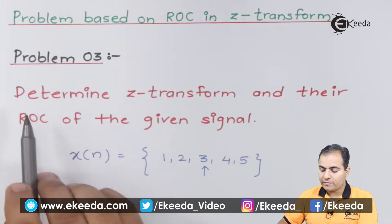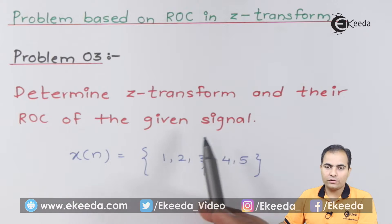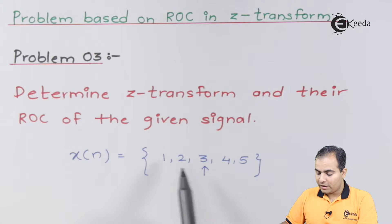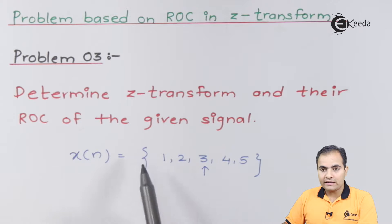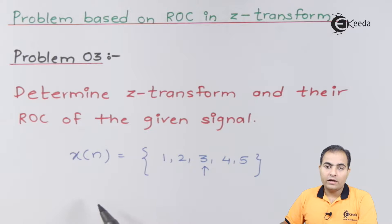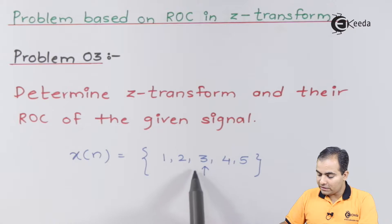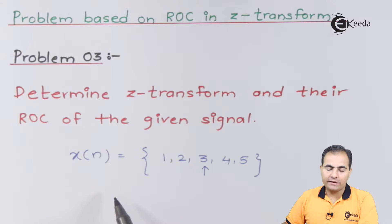Problem number three: determine the Z-transform and the ROC of the given signal — you can also call it a sequence or function. x of n is given as: 1, 2, 3, 4, 5. These are the amplitudes. In a discrete sample sequence, amplitude values are given, and the arrow indicates the location of those amplitudes. This arrow indicates the origin value, which means at the origin we have amplitude 3. On the right-hand side we have positive instances, and on the left-hand side we have negative instances.